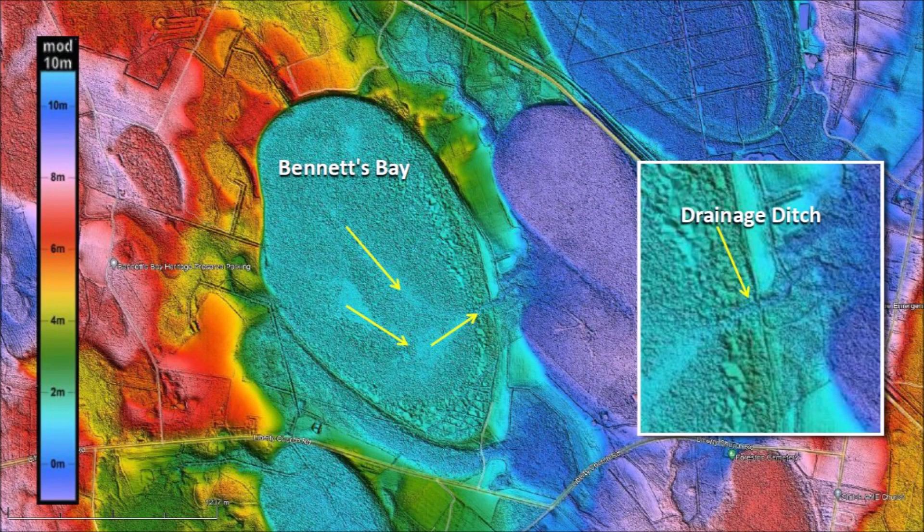Although Bennetts Bay is a nature preserve, the hand of man is evident by the existence of several drainage ditches that cross at various points through the rim of the bay. The LiDAR image shows areas with less vegetation where the water flows, and the inset has a close-up of the channel on the east rim of the bay that drains eastward away from Bennetts Bay. Many bays that are used for agriculture have been drained in this way.